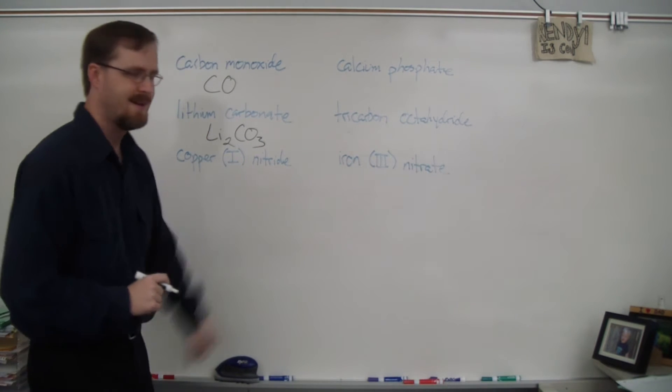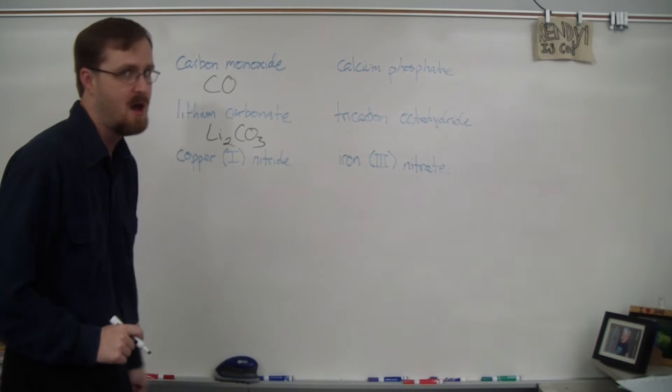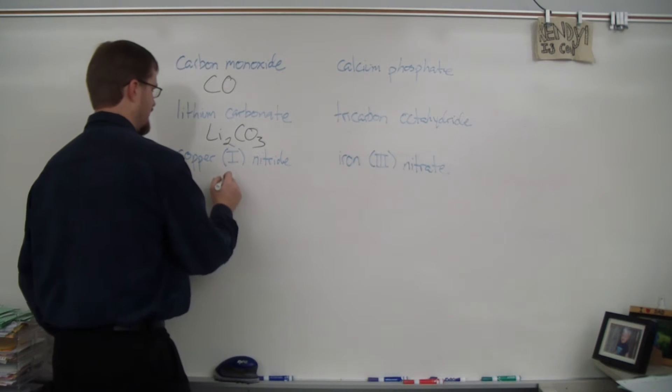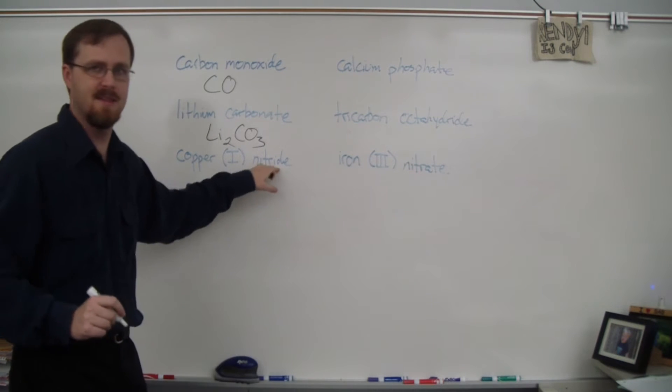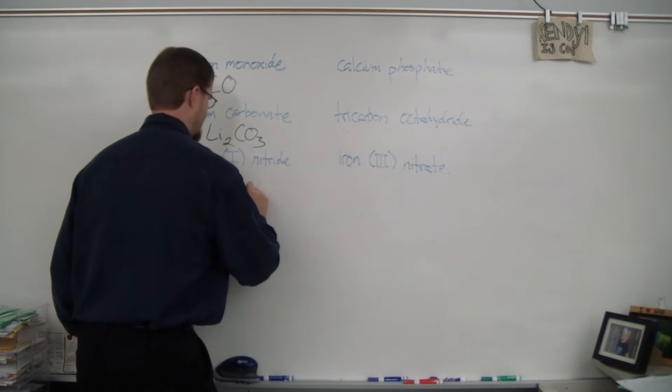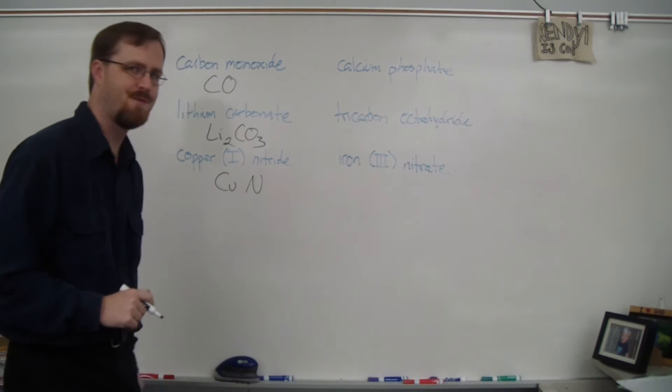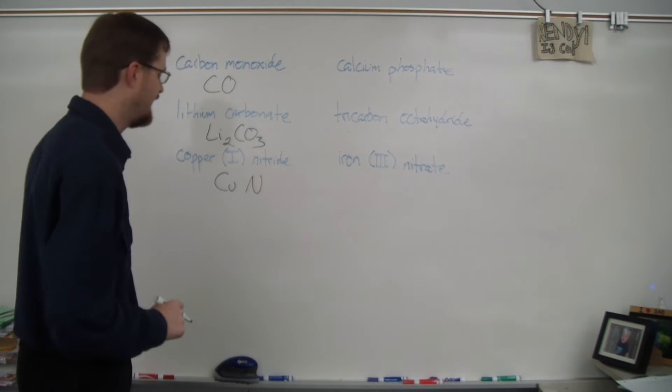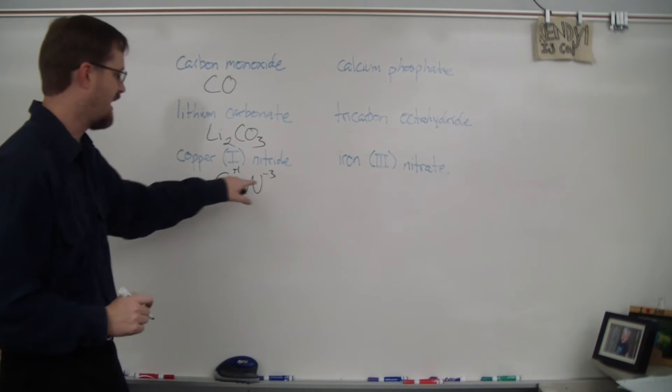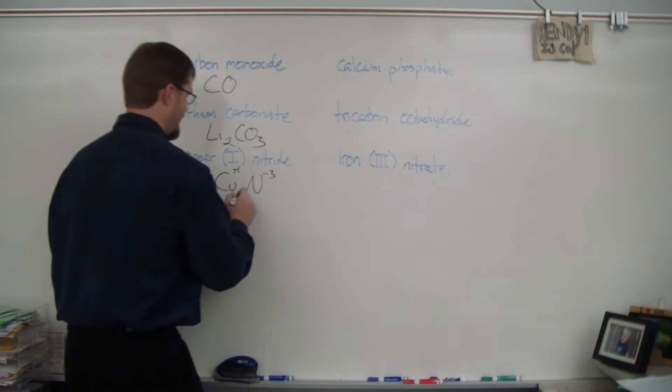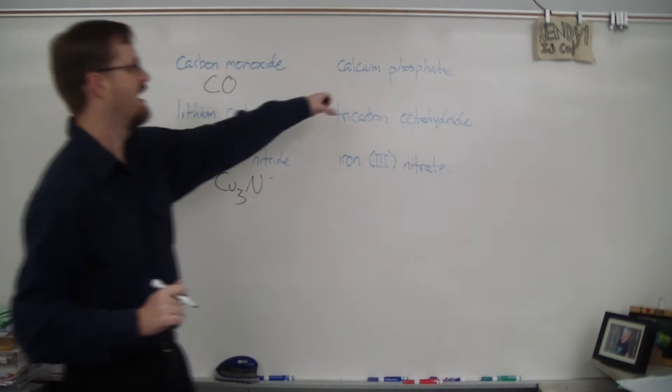Copper one nitride. So I have this one right here which means that copper is a transition metal and has a charge of plus one. Copper, its symbol is Cu. Nitride, that's short for nitrogen, so that is N. Copper here is a charge of plus one. Nitrogen is in group five, so it has a charge of negative three. So if we have a plus one and a negative three here, I need three coppers in order to balance out the one nitrogen. So this is Cu3. Next one.